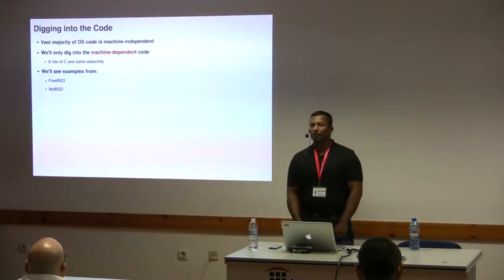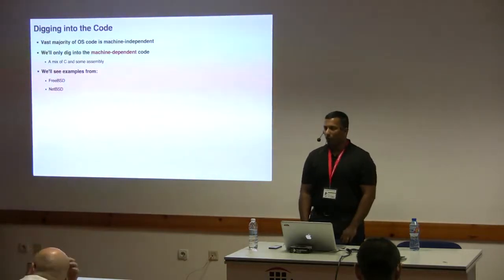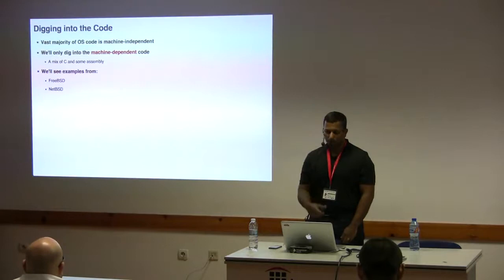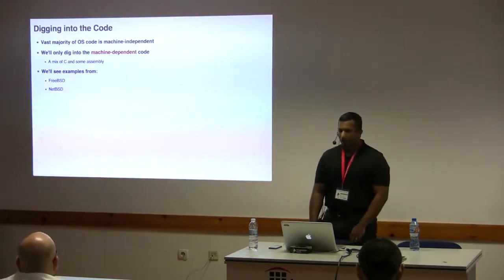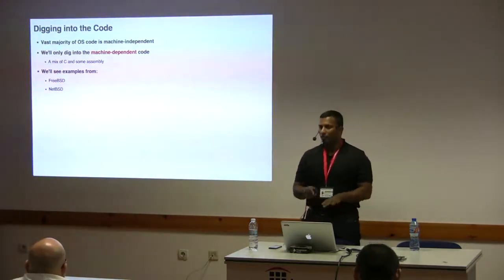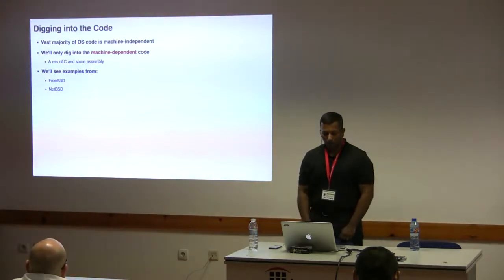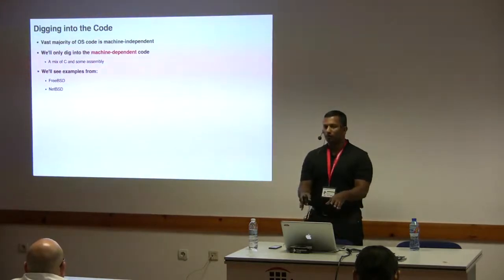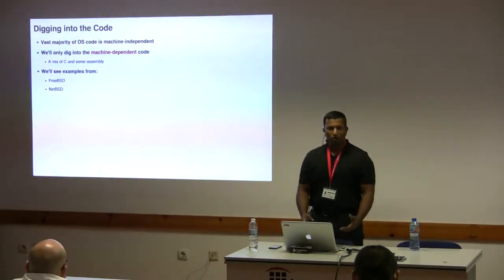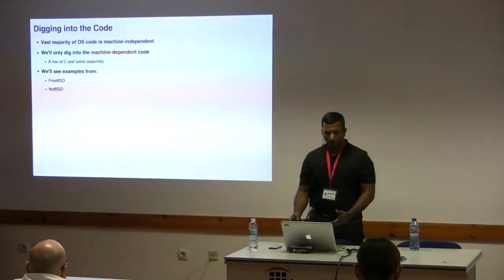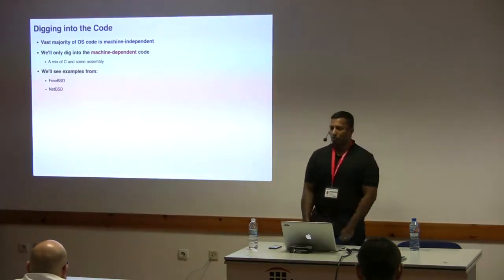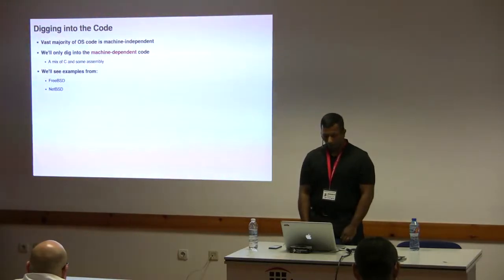Now that we've covered ARM basics and documentation, let's dig into the code. The vast majority of OS code is machine-independent — the same across all architectures. A small portion is machine-dependent ARM-specific code, usually a mix of C and assembly. We'll look at examples from FreeBSD and NetBSD covering machine-dependent early kernel initialization.